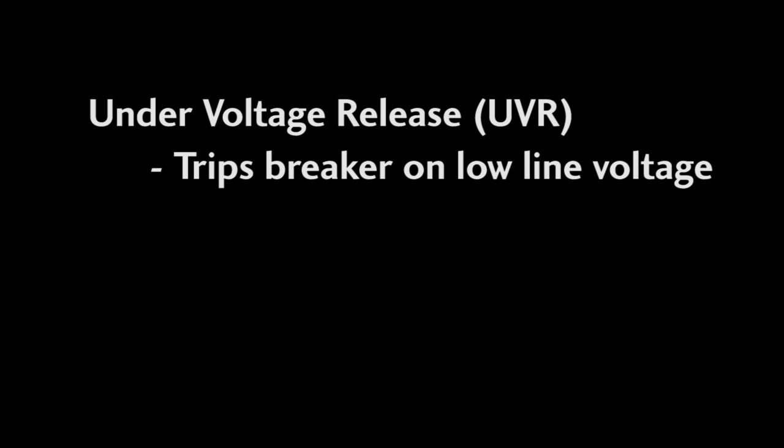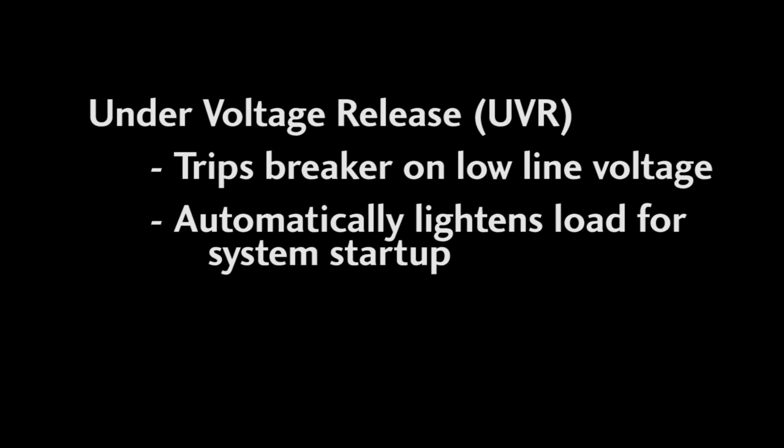An undervoltage release – or a UVR – trips the breaker when it senses line voltage is too low. This is handy when you have a system that shuts down and you want to be sure that the system isn't heavily loaded when it tries to start back up. The UVR will have tripped the breaker when the line voltage dropped so when you go to bring the system back up, this load won't be a burden.